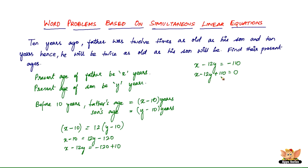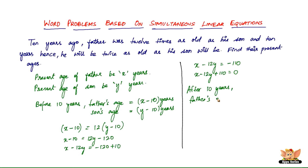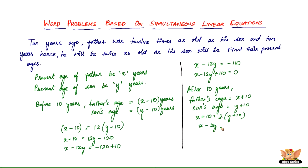Now, the next condition says 10 years hence — or 10 years afterwards — the father will be twice as old as his son. After 10 years, father's age will be X plus 10, and son's age will be Y plus 10. Father's age is two times the age of his son. Forming an equation from this, we get X minus 2Y minus 10 equals 0.